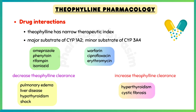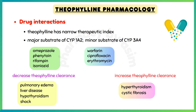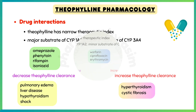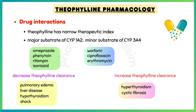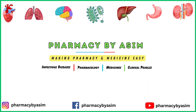In addition, acute pulmonary edema, cirrhosis or liver disease, fever, hypothyroidism, and shock can decrease theophylline clearance, while hyperthyroidism and cystic fibrosis can increase its clearance. That was all about the pharmacology of theophylline.